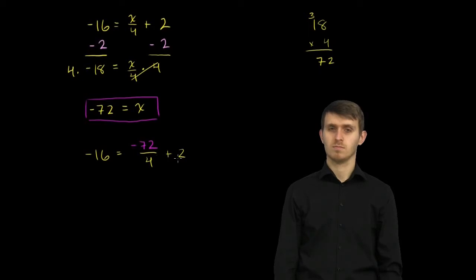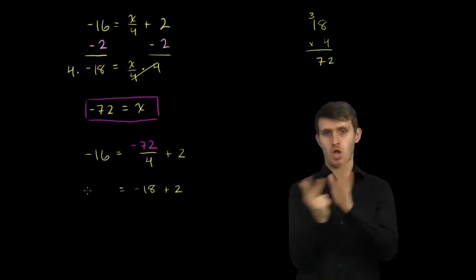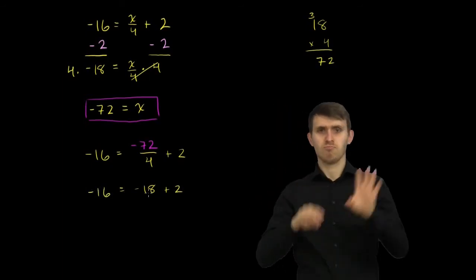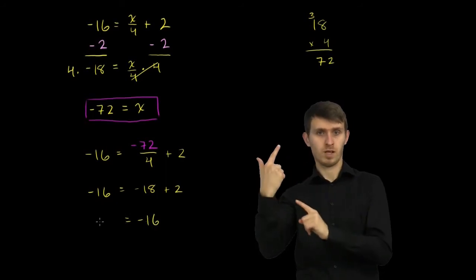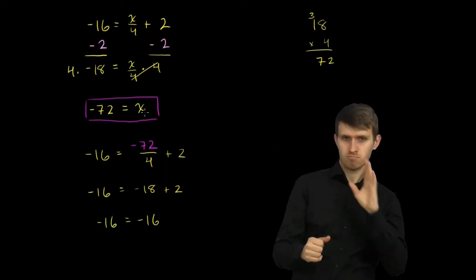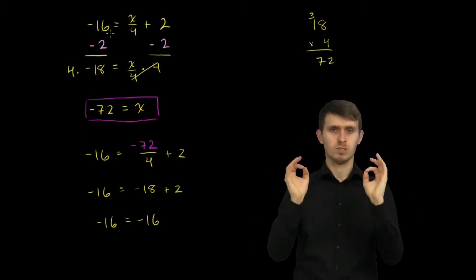Let's see if this is actually true. So this right-hand side simplifies to negative 72 divided by 4, we already know that that is negative 18. So this is equal to negative 18 plus 2. This is what the equation becomes. And then the right-hand side, negative 18 plus 2, that's negative 16. So it all comes out true. This right-hand side, when x is equal to negative 72, does indeed equal negative 16.